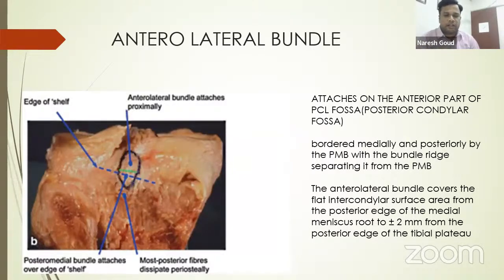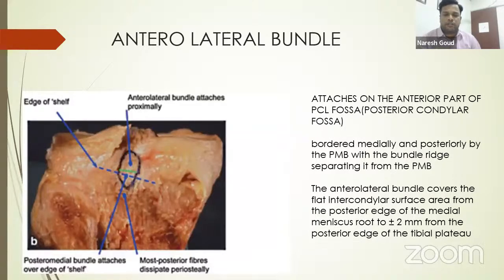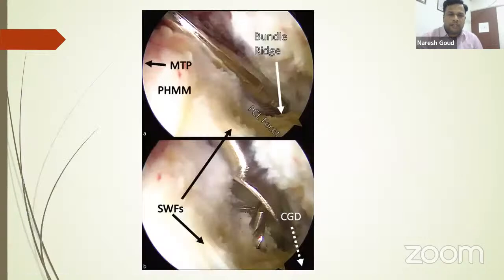Those shiny white fibers of the medial meniscus are very important when drilling the tibial guide pin — if damaged, root tears can happen. It ends at the bundle ridge, which is a projection similar to the bifurcate ridge that divides the anterolateral and posteromedial bundles. In this arthroscopic picture, through the posteromedial portal, we can see the PCL being shaved and the PCL facet clearly visible.